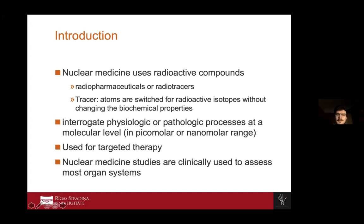Nuclear medicine uses radioactive compounds. These can be radiopharmaceuticals or radiotracers. A tracer is an atom that is switched with radioactive isotopes, but it's not changing the biochemical properties. Because of that, we can target different organs with a substance, and the radioactive isotope will make it visible in the gamma camera.